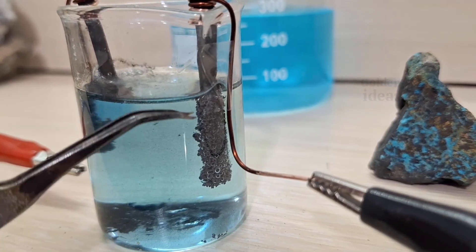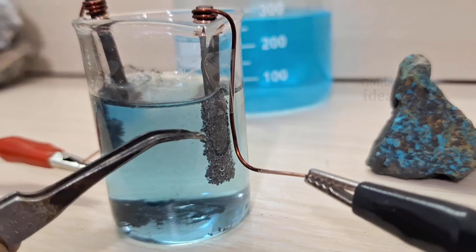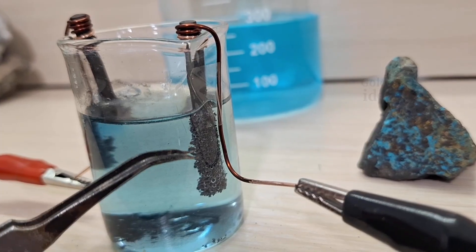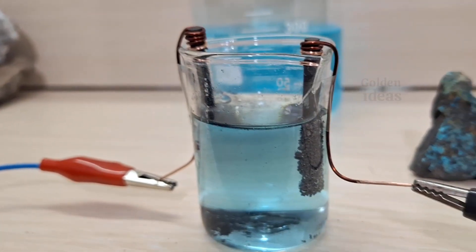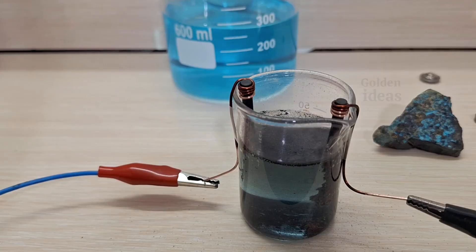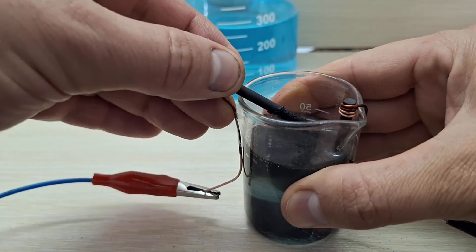Any metal used as the anode, meaning the positive side, will gradually dissolve. This means that the metal from the anode is released into the solution as ions and is replaced by the elements already dissolved in the solution, which then plate onto the cathode as solid metal. The choice of anode metal depends on which element you want to recover.